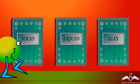Bob the Molecule decides to visit his friends, his fellow molecules in the three states: the solid, liquid, and gaseous state. Let's see what he observed.